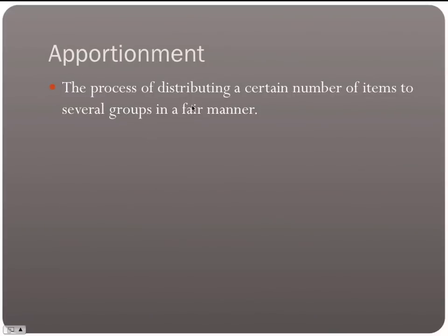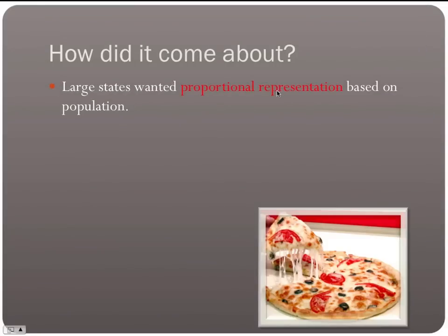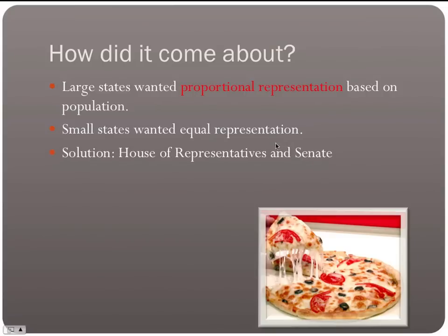Apportionment is the process of distributing a certain number of items to several groups in a fair manner. The large states wanted proportional representation based on population, while small states wanted equal representation. The solution was creating the House of Representatives, which uses proportional representation, and the Senate, which uses equal representation with two seats per state.